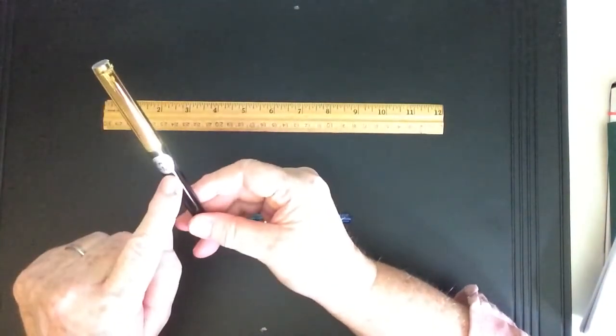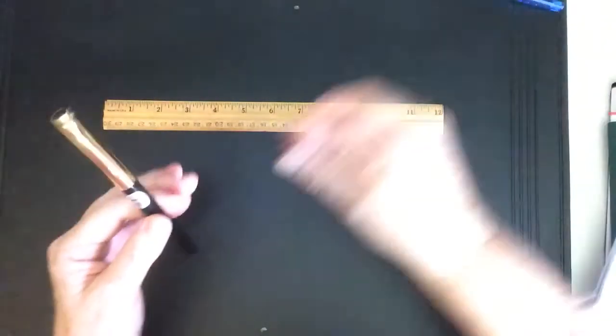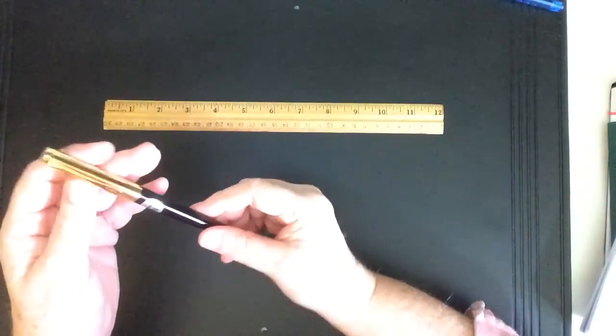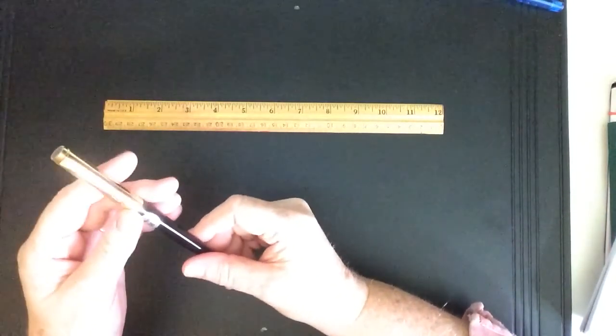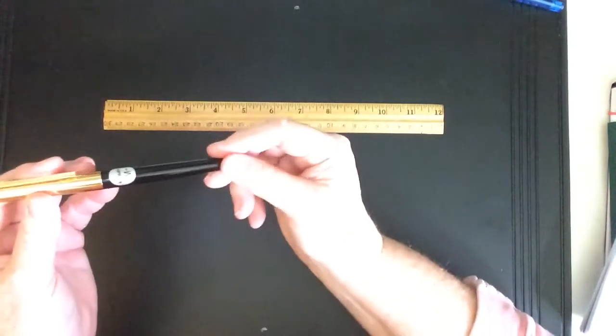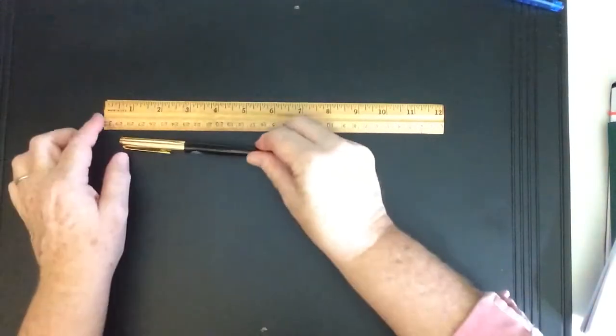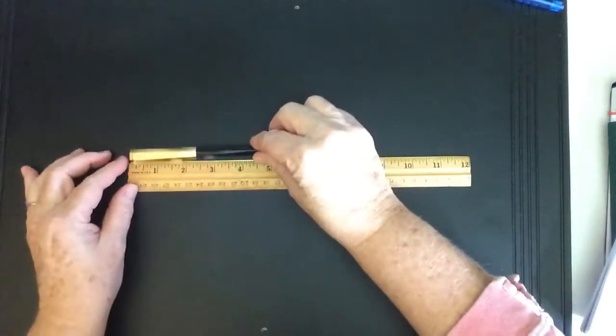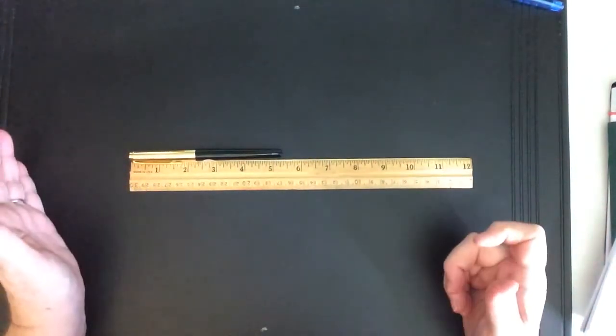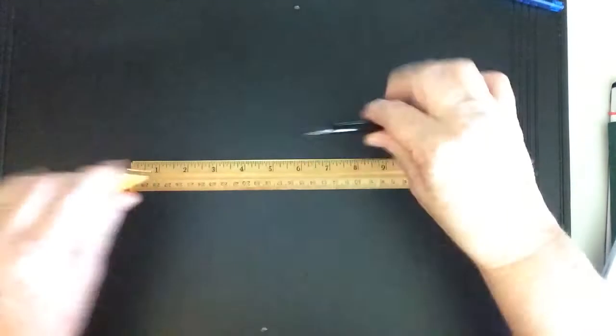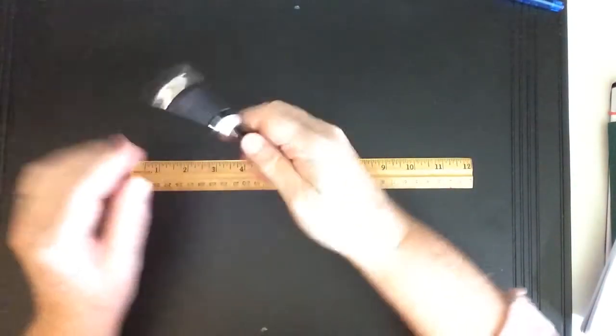It's medium nib. And the one I chose was this black and gold one because I have some Pilot 78Gs. I didn't have a black one, so I thought I want a black one. But this is a pretty pen, I think. It's got a flat bottom. Let's measure it and see what it is here. Right at five and a quarter inches capped.